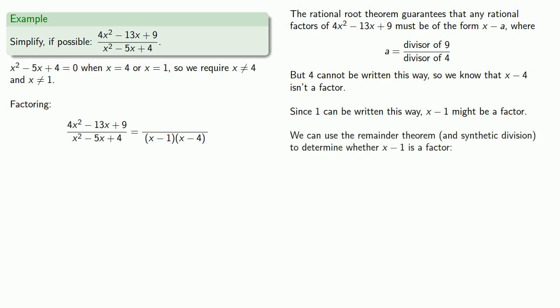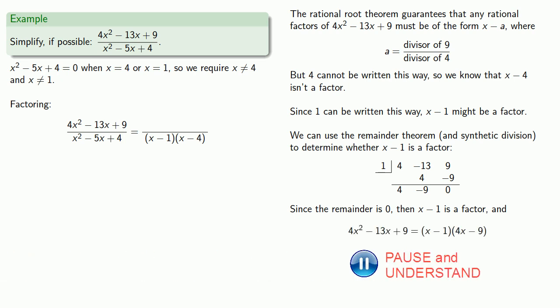And so we can use the remainder theorem and synthetic division to determine whether x minus 1 is a factor. So we'll do that division. And since the remainder is 0, then x minus 1 is a factor, and our numerator is x minus 1 times 4x minus 9. And now we have a common factor in numerator and denominator. We can cancel it out and get our simplified form.